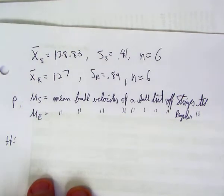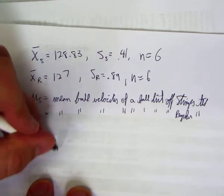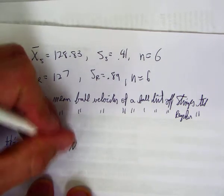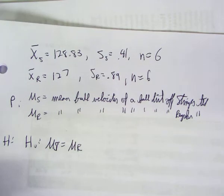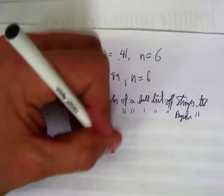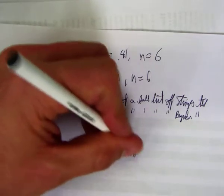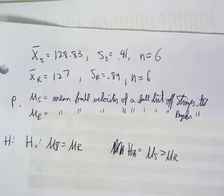So the hypothesis, H of O is mu of s equals mu of r. And the question is, is there evidence that the stinger t would have a higher velocity? So the H of A is going to be mu of s is greater than mu of r, so it's a one-tail test, okay?